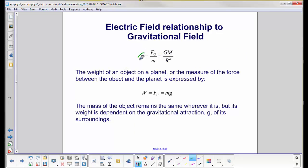Here's g, the gravitational field, and we can express the weight of an object on a planet, or the measure of the force between the object and the planet, just like we did with electric fields, as F equals mg. We call that weight. The mass of the object remains the same wherever it is, but its weight is dependent on the gravitational attraction g of its surroundings.